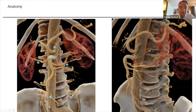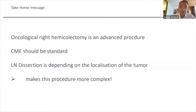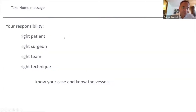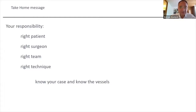To conclude: the oncological right hemicolectomy is an advanced procedure. CME should be standard in case of carcinoma, and for the right flexure, there should be extended lymphadenectomy. Lymphatic dissection depends on tumor localization, making this procedure more complex. It's your responsibility as a surgeon to choose the right patient for the right surgeon — this is not for every surgeon, not for beginners. You need the right team, everyone should know what to do, and of course the right technique. Take care of your patients, know your case, and know the vessels.